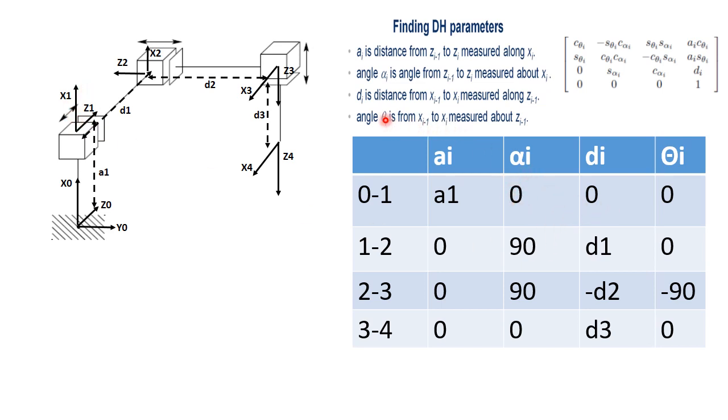Di is basically dr. In this case, d1 is basically x0 to x1 along the axis z0. x0 to x1, there is no shift along z0. Hence, d1 is 0. Theta 1 is basically x0 to x1 about z0. There is no change because both are in the same direction. Hence, theta 1 is 0.